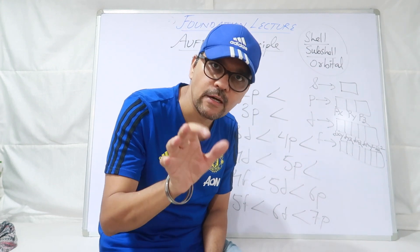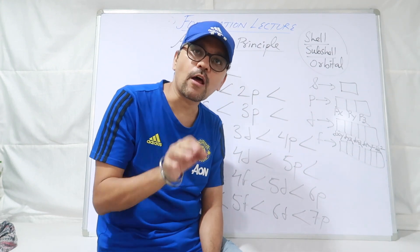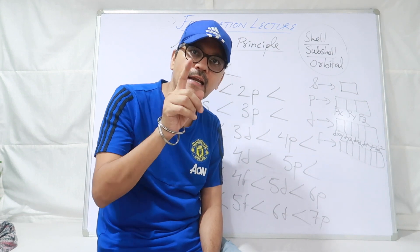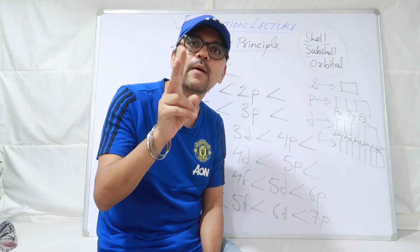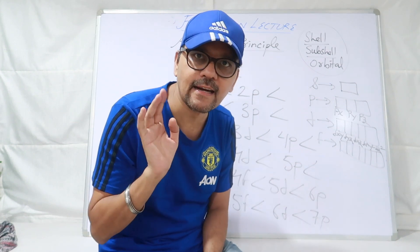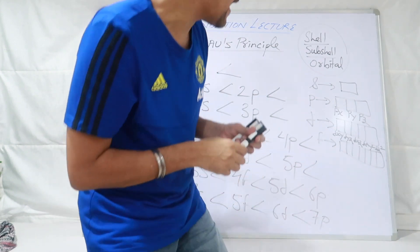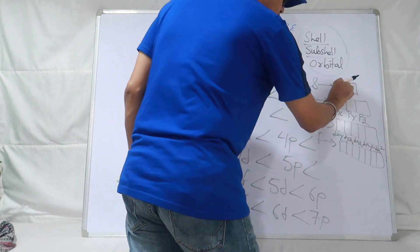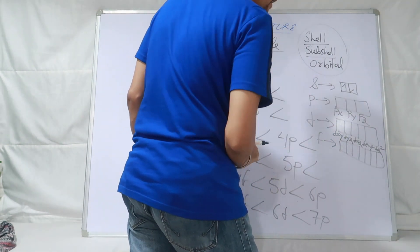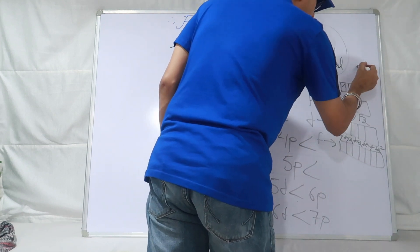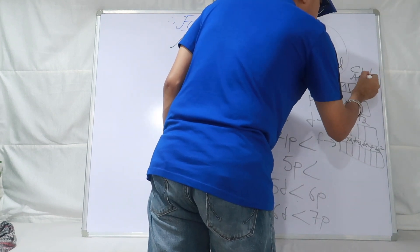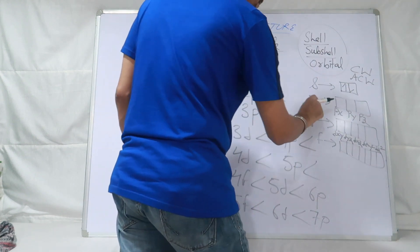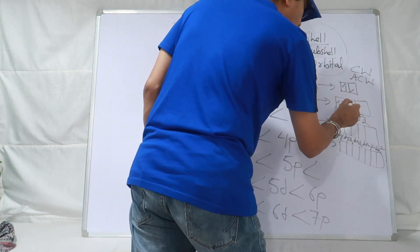Ab ek statement apni notebook mein likh lo: an orbital cannot accommodate more than two electrons. Ek dabba do electrons se zyada accommodate nahi kar sakta. Yaad rakhna. S ke andar maximum kitne electrons aayenge? Do — ek clockwise, doosra anti-clockwise, they are parallel or anti-parallel. P mein total teen dabbe hain, to kitne electrons aayenge? Chhe.